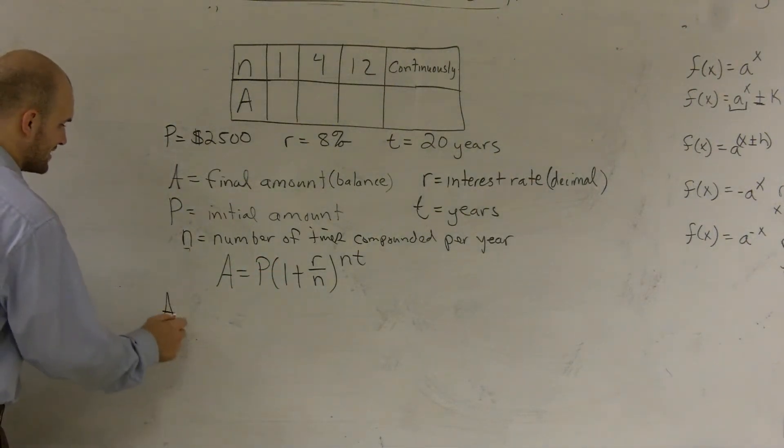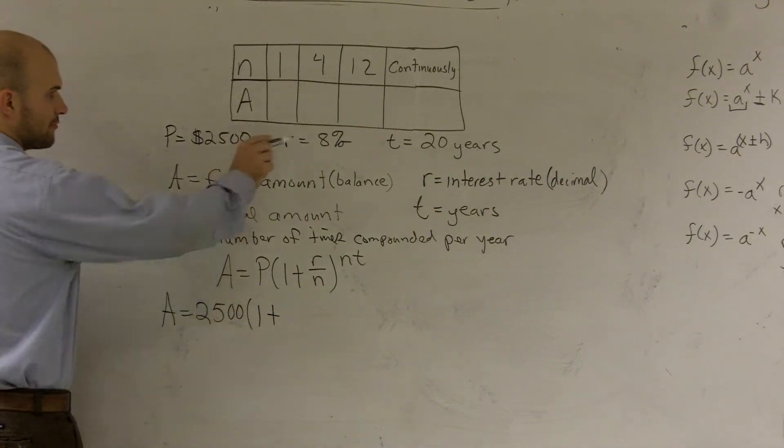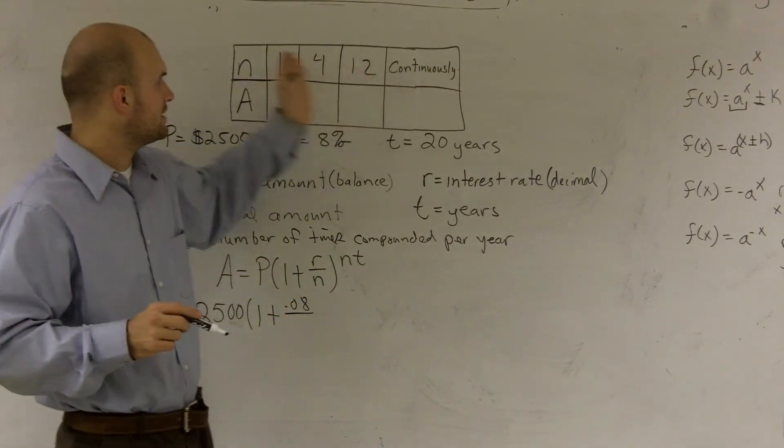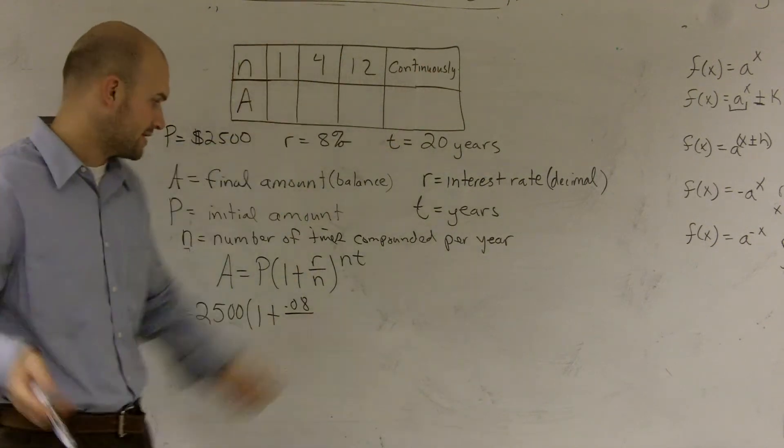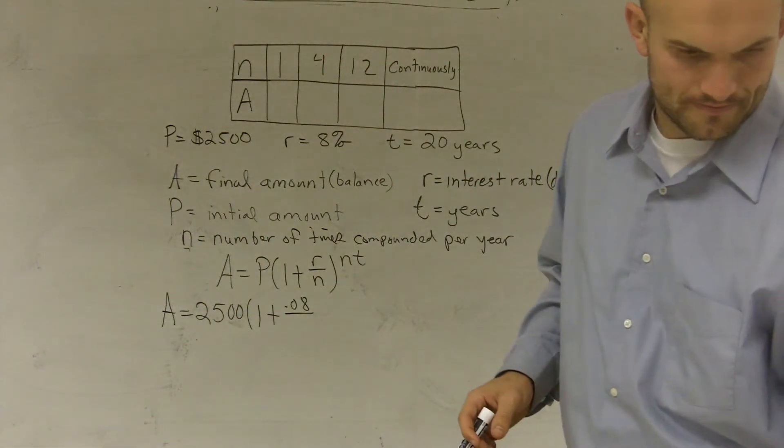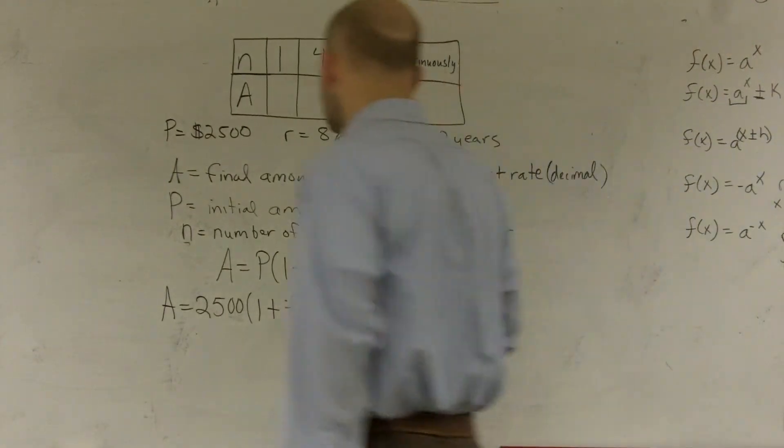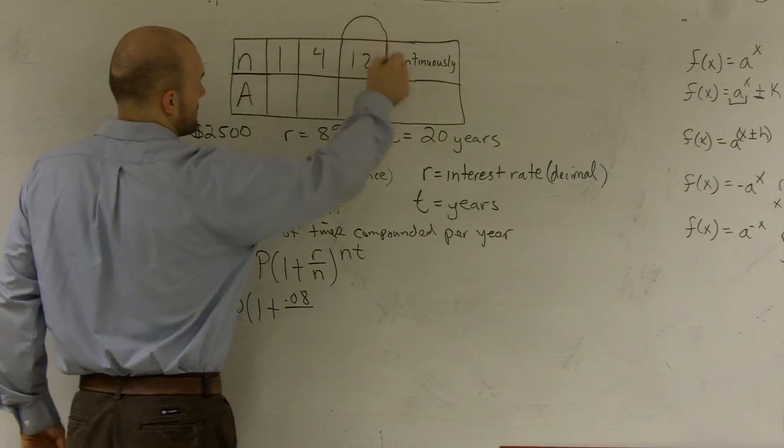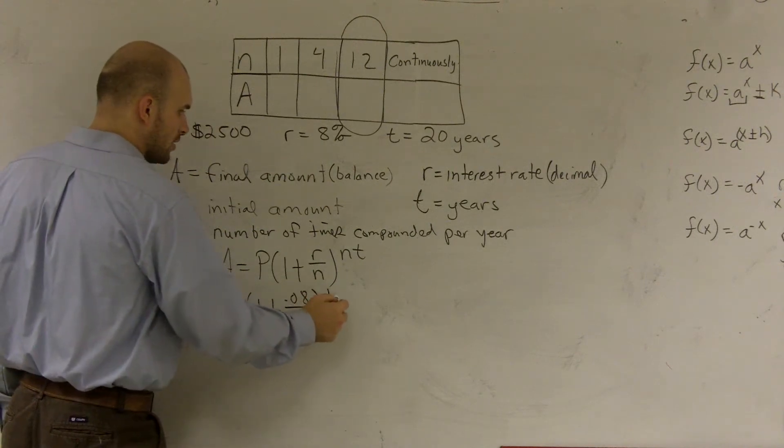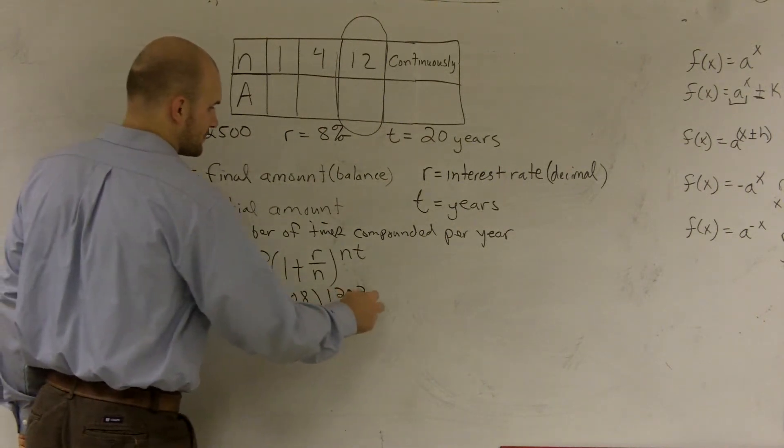So we don't know what A is. They asked us to find A. So therefore, I know my P is 2,500 times 1 plus my rate, which over here is going to be 0.08 divided by N, which is my compounded period. Now, each one of these are a different problem. Let's pick 12, OK? So I'm going to divide by 12, because that's my compounded periods. And then I'll do 12 times my number of years, which is 12 times 20 years.